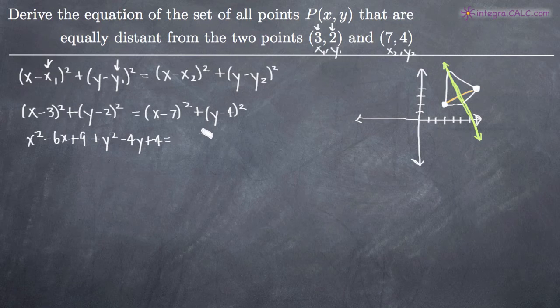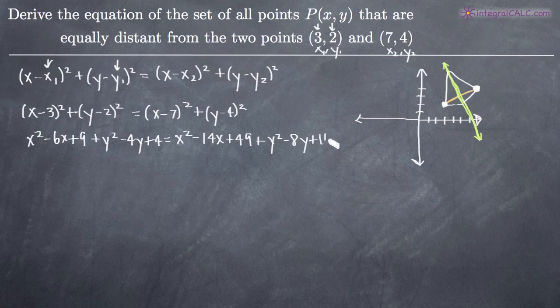Then over here on the right hand side we'll have x² - 14x + 49 and y² - 8y + 16. So now we're going to start consolidating terms.